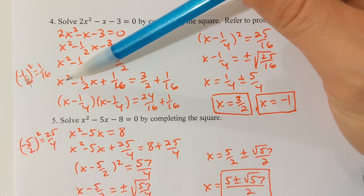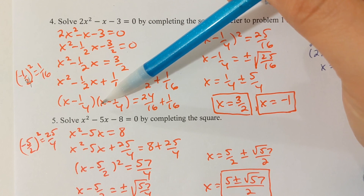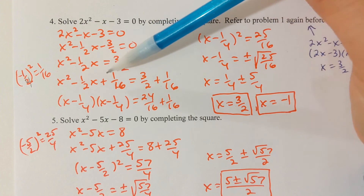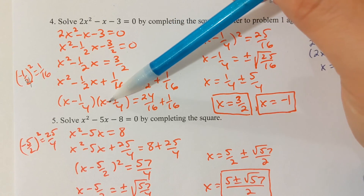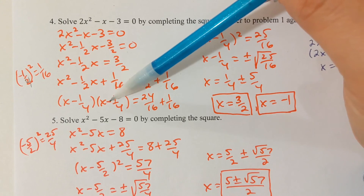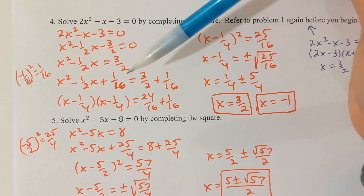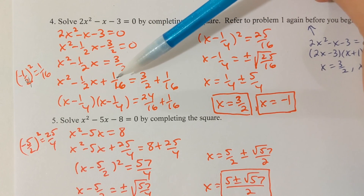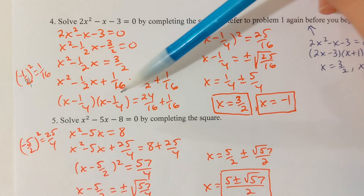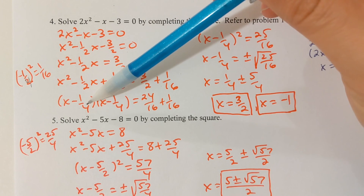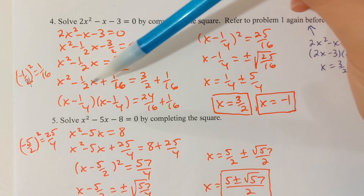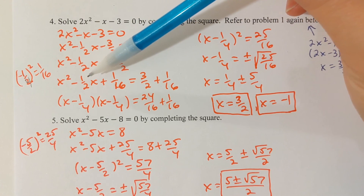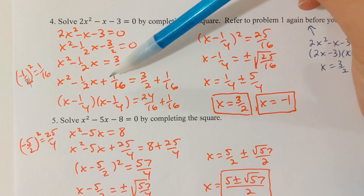I'm going to have x and x. The middle term is negative, the last term is positive. The only way for that to happen is if the signs go minus, minus — negative times negative is positive, and negative plus negative is negative in the middle. And if I use 1/4, x - 1/4 times x - 1/4 should give me x² - 1/2·x + 1/16.